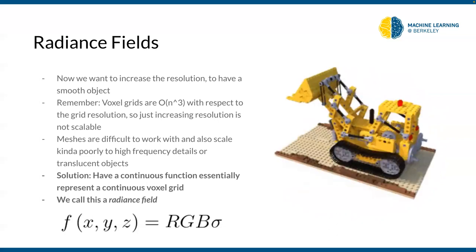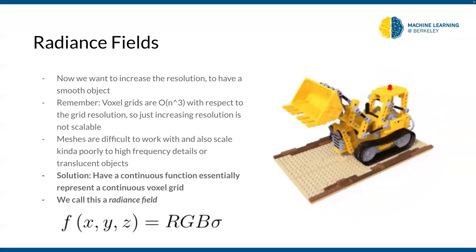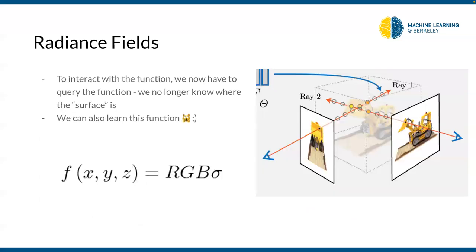With radiance fields we lose the notion of a surface. Previously with voxel grids we had a defined surface we could intersect, but with a radiance field there's no surface to intersect. So how do we render it? The answer is ray sampling: we cast the ray, sample it at different intervals along the ray, and aggregate those samples to create an image pixel. We'll talk more about volumetric rendering shortly.